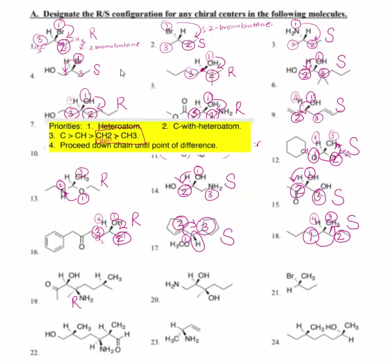For the second asymmetric center of number nineteen, oxygen is number one. This carbon versus that carbon — neither has a hydrogen, so we look for an atom of difference. Being double bonded to an oxygen is like being single bonded to two oxygens. Here I have a carbon bonded to an oxygen, but here I have a carbon bonded to a nitrogen. Oxygen outweighs nitrogen, so this is going to be number two and that makes the other side number three. Number four is a hydrogen pushed to the rear. Rotating counterclockwise makes this asymmetric center an S. So we have an S for the alcohol-containing center and an R for the amine-containing center.